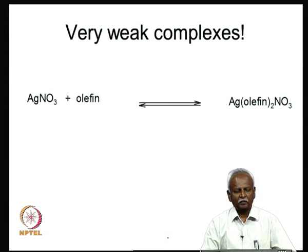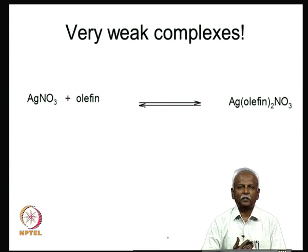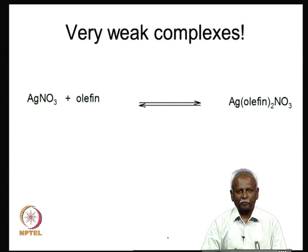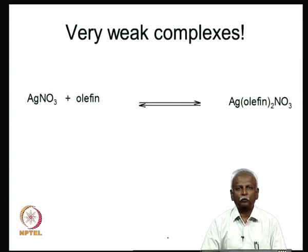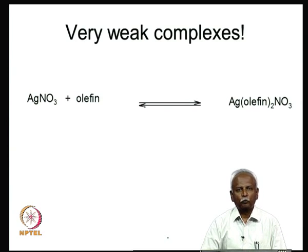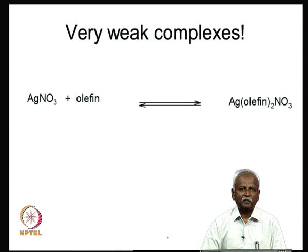One can also take an unsaturated complex and add an olefin to form a metal olefin complex. The group 11 elements — which have a d10 complement of electrons and are oxidized to the plus-1 oxidation state — silver(I), gold(I), and copper(I) are suitable examples. You can very easily make these olefin complexes, especially the copper and silver metal complexes, by simply taking the metal salt and reacting it with an olefin.